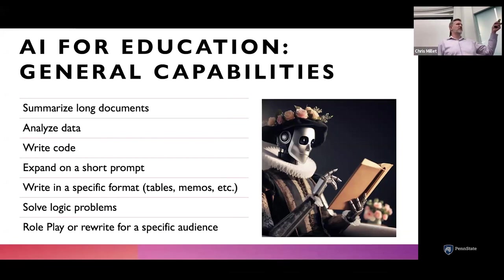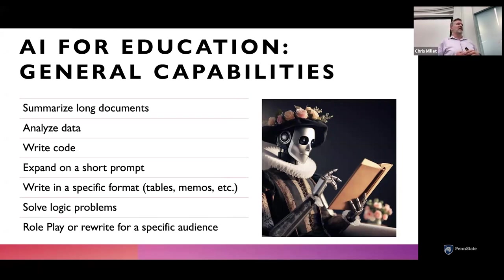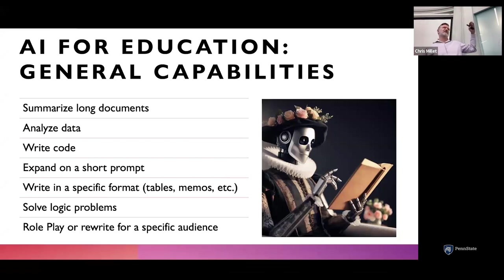AI can summarize long documents — and the context windows keep getting bigger. GPT-4 can now consume entire books, so you could actually upload an entire novel and then ask questions about the meaning, overall themes, and whatever. Research papers are easily within the context window of what AI can understand.